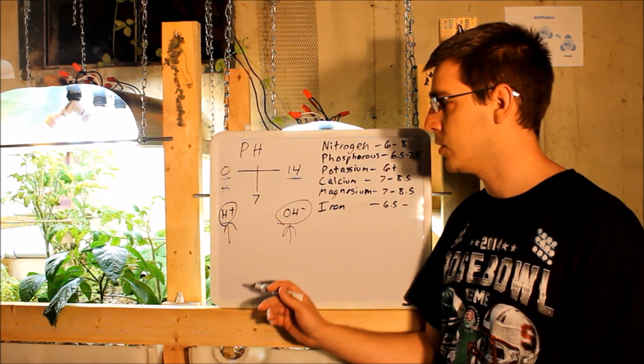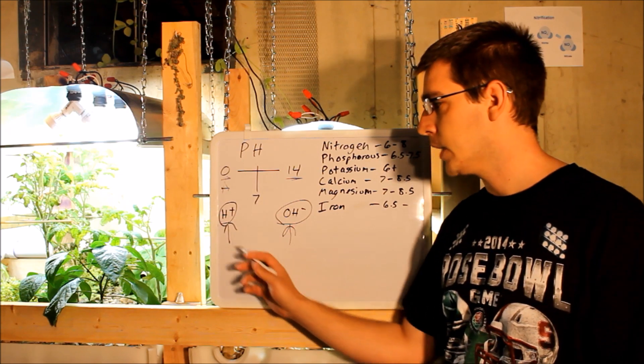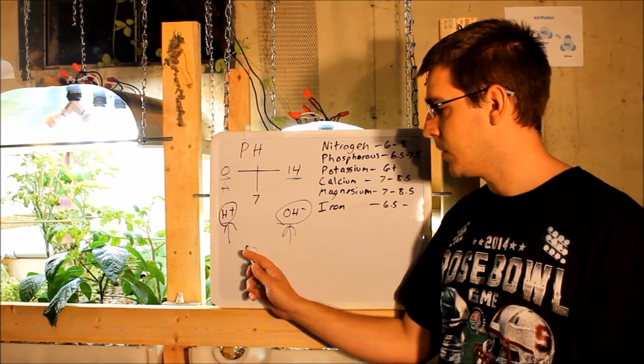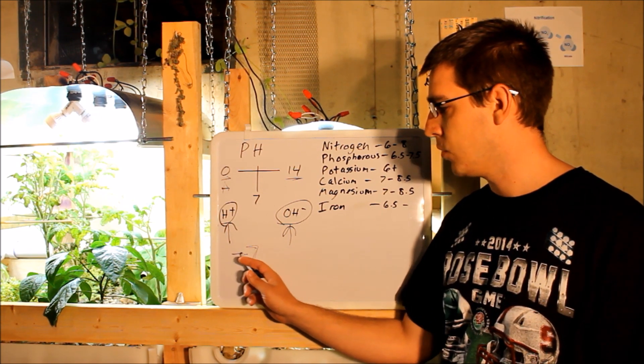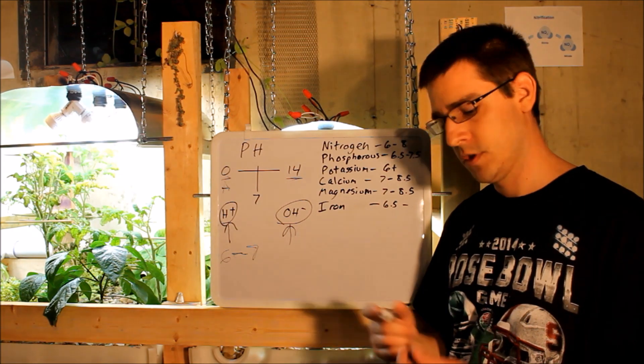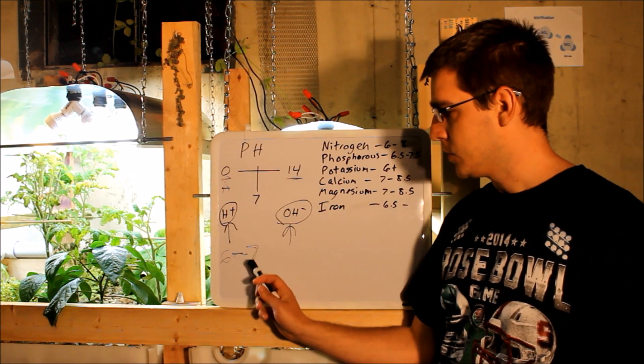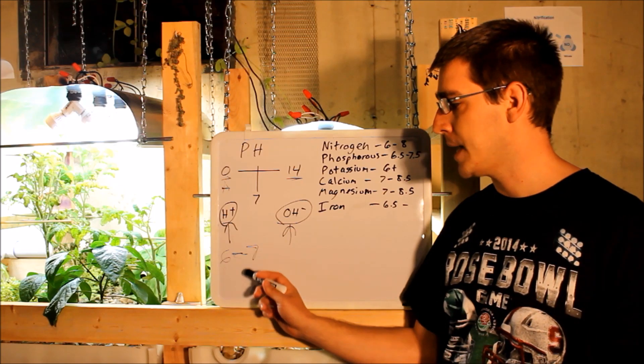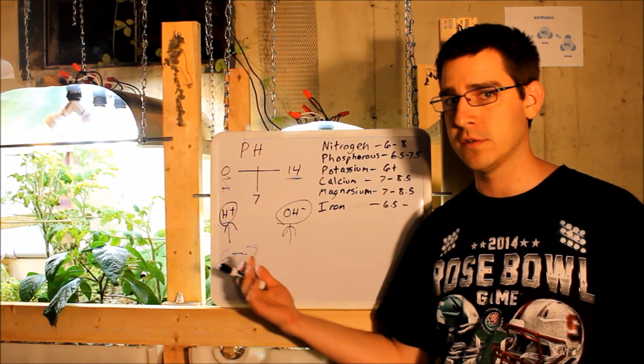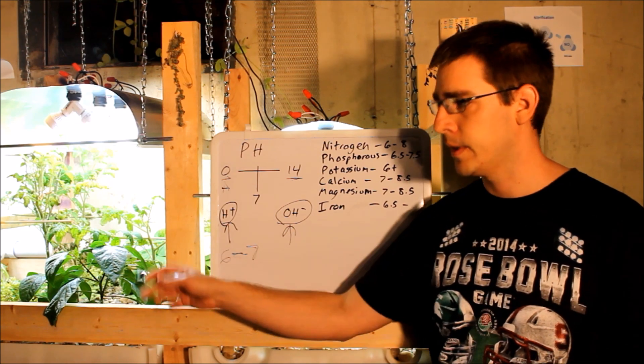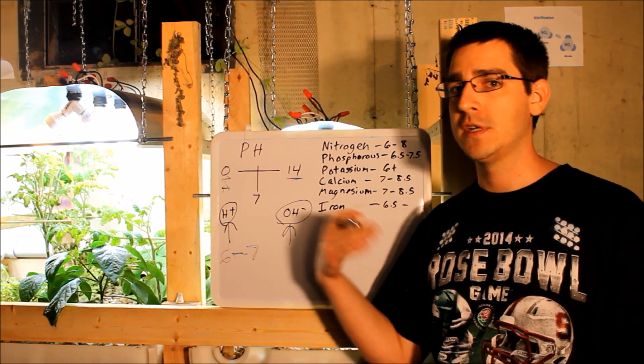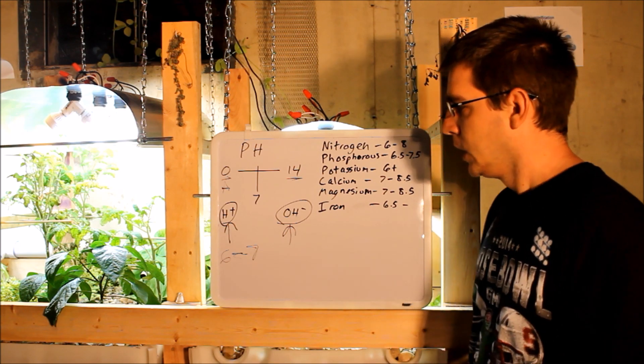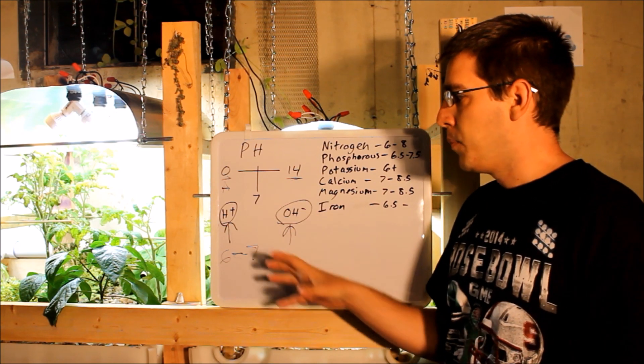So those are the two things that we're actually measuring. Now pH works on a scale from zero to 14, but it's logarithmic. So if you started off with a pH of 7 and you move down to a pH of 6, I apologize about the writing here, but if you move down one point in the scale, you're actually going up 10 times the amount of hydrogen ions in that solution. And it goes by 10 by 10 by 10, it's logarithmic. So every point you go down or up the scale, you increase by 10 fold. So that's an overview of what pH is.